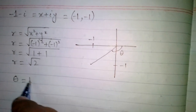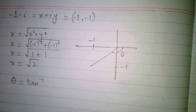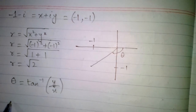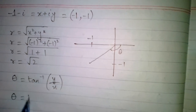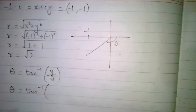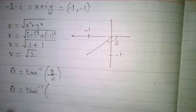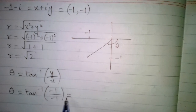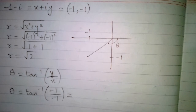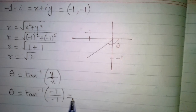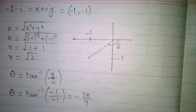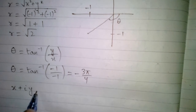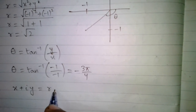Now we will calculate the argument theta of z. Theta is equal to tan inverse of y upon x, which gives us tan inverse of minus 1 upon minus 1. This is equal to minus 3 pi by 4.